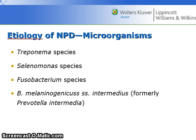The species of microorganisms associated with necrotizing periodontal diseases include the Treponema species, Selenomonas species, Fusobacterium species, and B. melaninogenicus SS intermedius, formerly known as Prevotella intermedia.